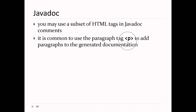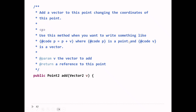You're allowed to insert a subset of HTML into javadoc comments. If you don't know HTML, don't worry about it. But you can have simple lists and separate paragraphs — if you want separate paragraphs, start each with <p>, the HTML tag for a paragraph. For example, the add method in Point2 that adds a vector to a point has a separate paragraph explaining that p.add(v) is equivalent to p = p + v — indicating that this method changes the point used to call it.